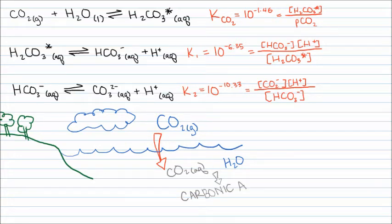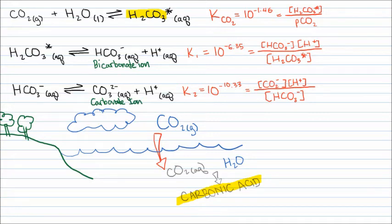Carbonic acid dissociates twice, each time releasing a proton. The first time it releases a proton it forms bicarbonate, and the second time, carbonate.